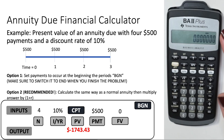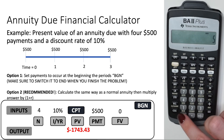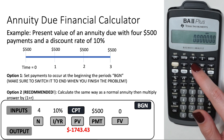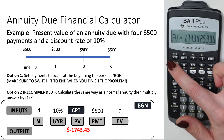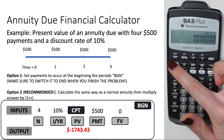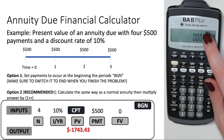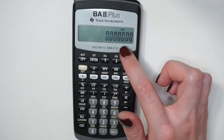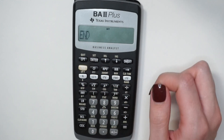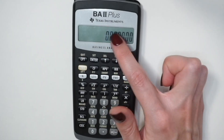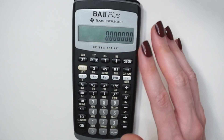With BGN set, solve the annuity due example: $500 payments, four periods, 10% discount rate. Set N=4, I=10%, PMT=$500. Quit, hit Compute, calculate Present Value — you get negative $1,743. When done, switch back to end-of-period: go to 2nd Payment, then 2nd Enter to change it back to 'end.' Quit out — the BGN indicator disappears, and the calculator returns to ordinary annuity mode.